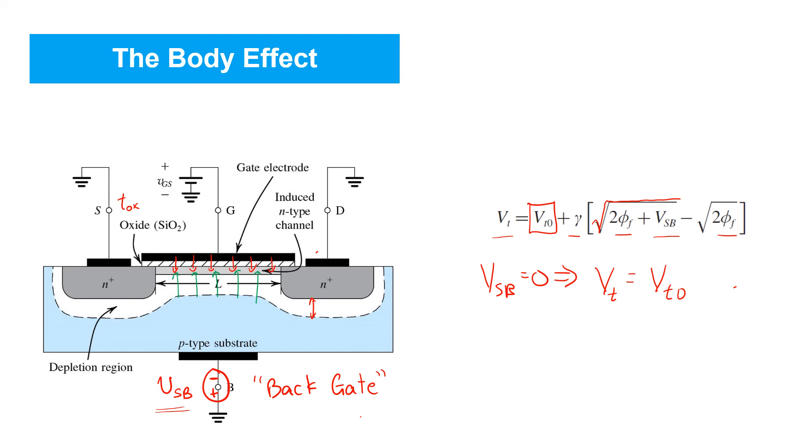So, if you purchase or use a discrete MOSFET with only three terminals, that's what's happening. Internally, within that package, the body terminal's been shorted to the terminal that's labeled source. So, you need not worry about the body effect in those cases.